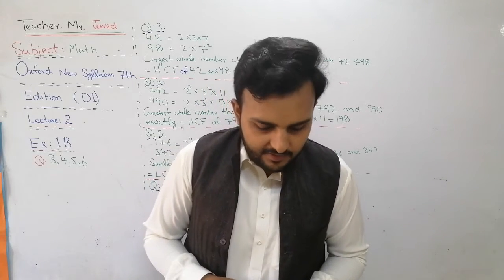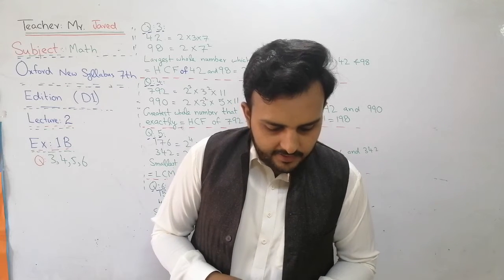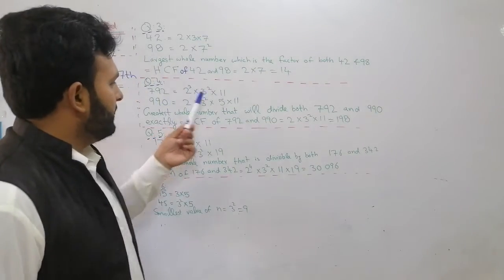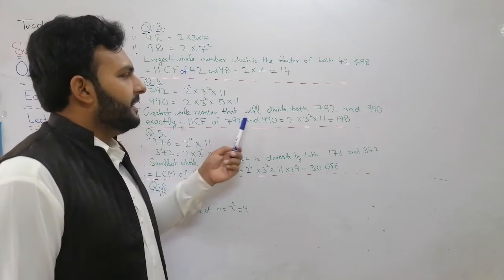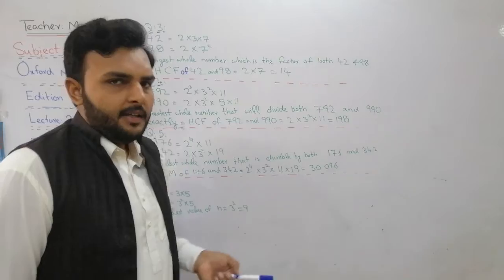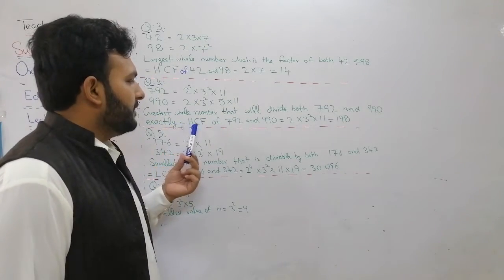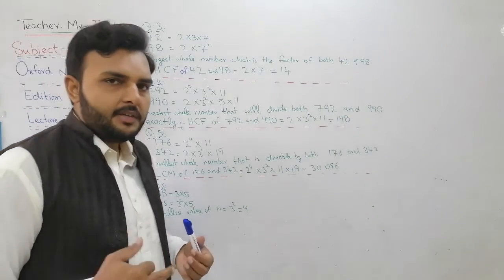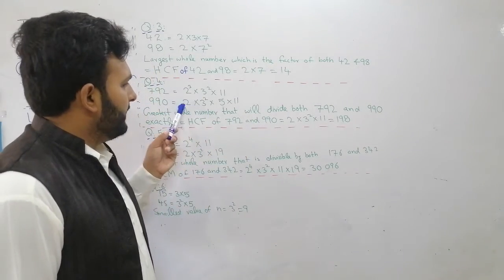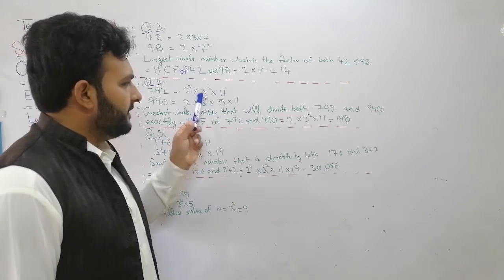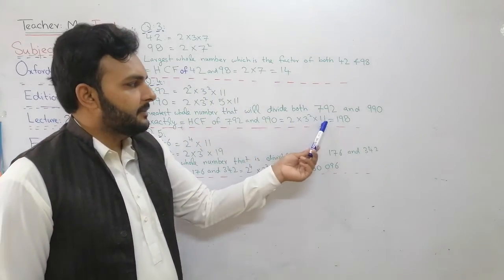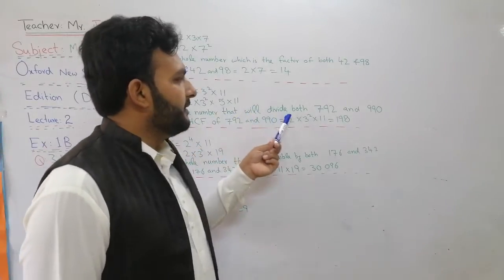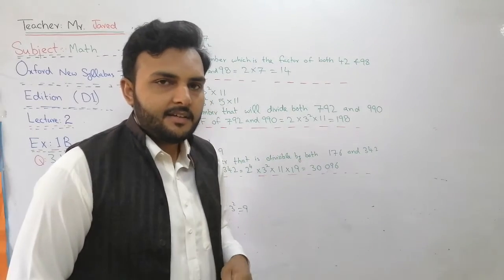The greatest whole number that divides 792 and 990 exactly is equal to the HCF of 792 and 990. Taking the common prime factors: 2, then 3² which is present in both, then 11. After multiplication: 2 × 3² × 11 = 198. So 198 is the greatest whole number that divides both 792 and 990.